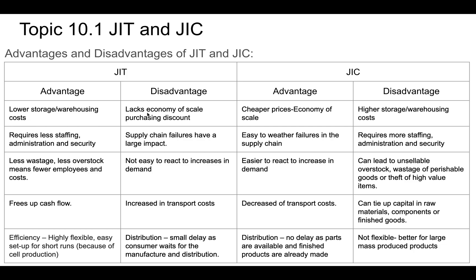A disadvantage of just-in-time is that you can't benefit from economies of scale purchasing. The more you buy, the cheaper it is — you get a discount for larger orders. Just-in-case gives you cheaper prices for components and raw materials because of economies of scale. You can see this in practice: buying one item on a site like a retail store is much more expensive per unit than ordering 500 of the same thing from a wholesaler like Alibaba.